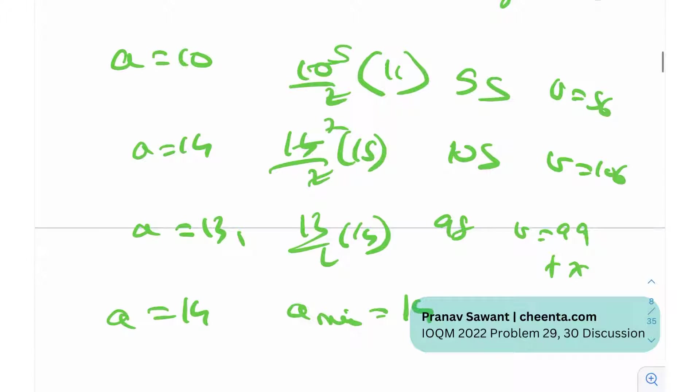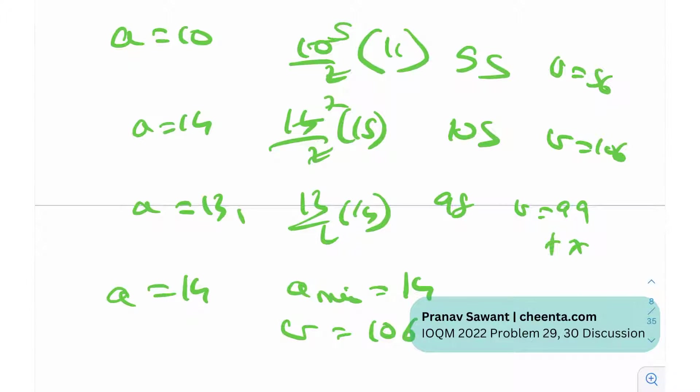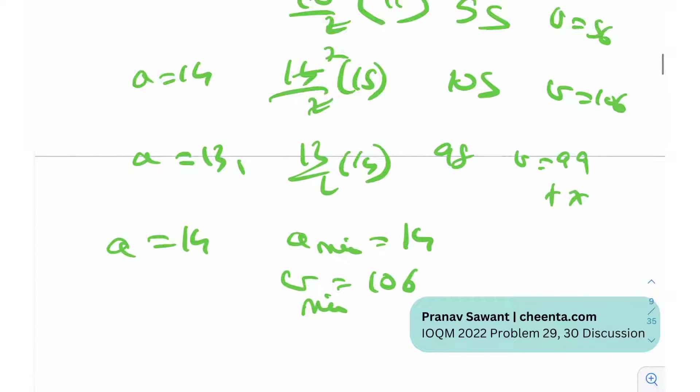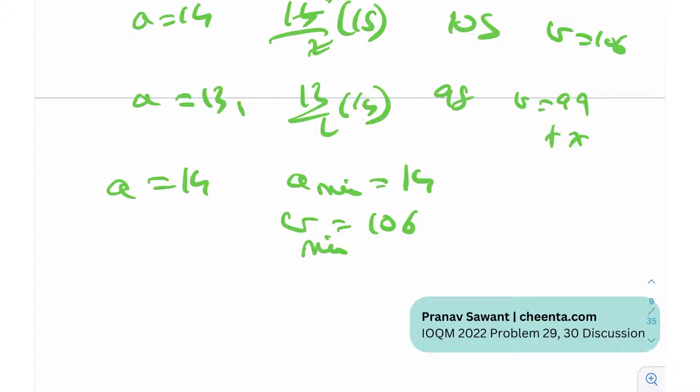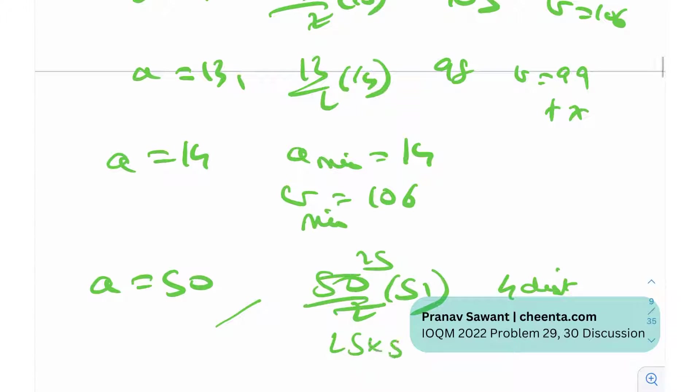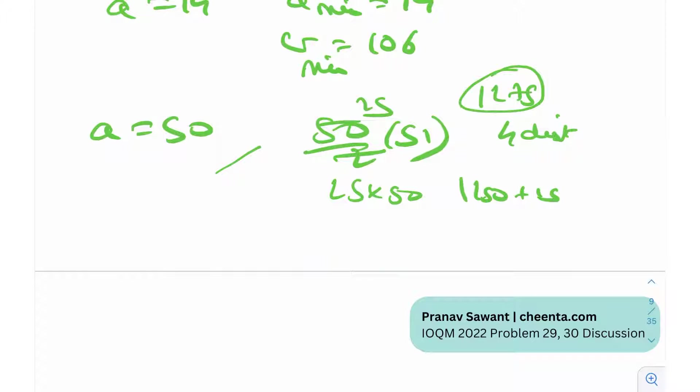Now what will be the maximum value? Using a similar idea, you can actually find out. For example, if I take A is equal to 50, the right hand side will be 50/2 times 51, which is 51 times 25, and this is really a four digit number. Why? Because 25 times 50 is 1,250 plus 25, this is 1,275, so it's a four digit number and it does not work out. If you actually do the calculations, A is equal to 44 is actually the maximum value for which b is a three digit number. So 44/2 times 45 is 45 times 22, so that's 45 times 20 plus 90, which is 990. So b essentially comes out to be 991, and this is the maximum value of b for which it is a three digit number.